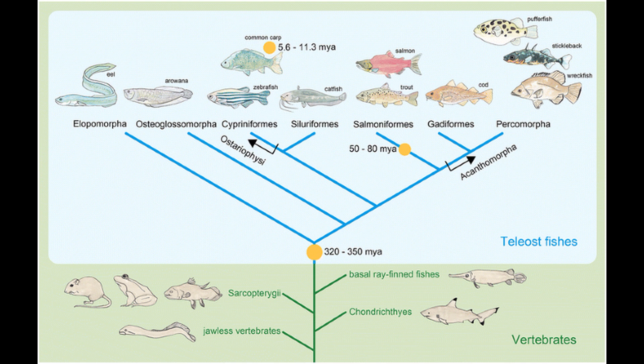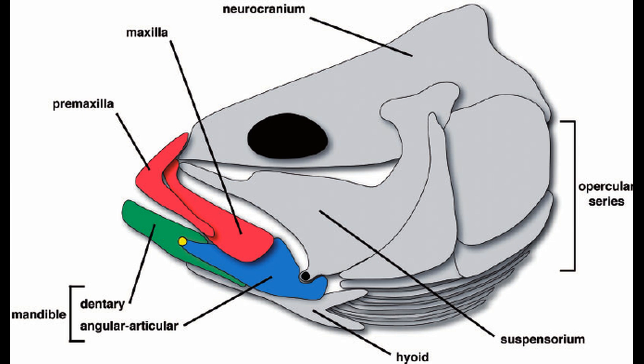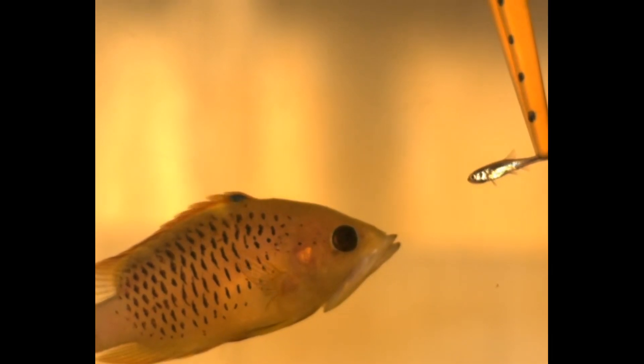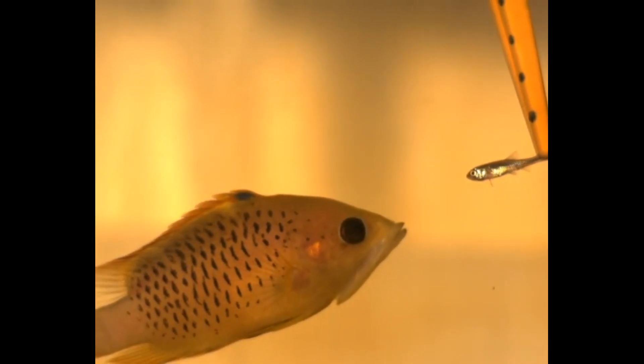Thus we have come to by far the most diverse clade of Actinopterygians, with around 30,000 described species: Teleostei. Following the common ancestor of Holostei and Teleostei, teleosts experienced a whole genome duplication, which has likely contributed to various evolutionary innovations. A major characteristic of teleosts is their movable premaxilla, unattached from the cranium; by protruding the premaxilla forward, this creates lower pressure within the mouth, sucking prey in. Some teleosts have taken this to an extreme, like the slingjaw wrasse, Epibulus insidiator, which can protrude its jaws over half the length of its head.